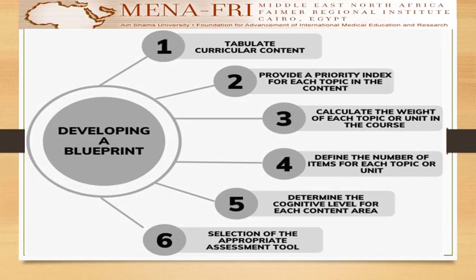Developing a blueprint follows six easy steps. The first step is to tabulate your curricular content. The second step is to provide a priority index for each topic. The third step is to calculate the weight of each topic or unit in the course. Fourth, define the number of items for each topic or unit. Fifth, determine the cognitive level for each content area. And the sixth step is to select the appropriate assessment tool for your test.